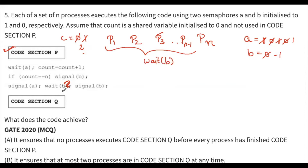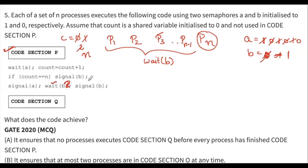All N-1 processes get blocked at wait(B). The B value stays zero — it is not one yet. When process PN executes code section P, wait(A) makes A zero, count becomes N. Now if count equals N, signal(B) executes and B becomes one. All blocked processes can now execute one by one.